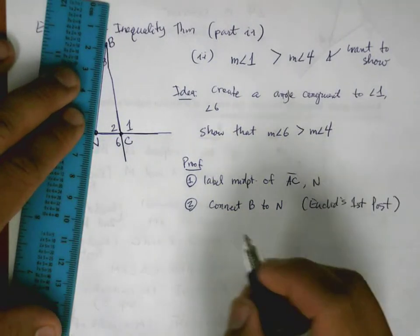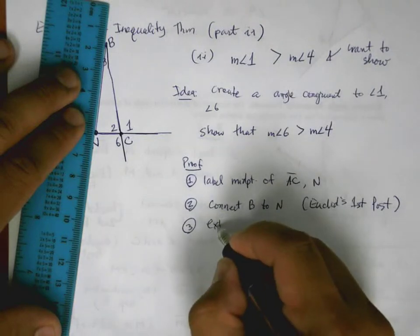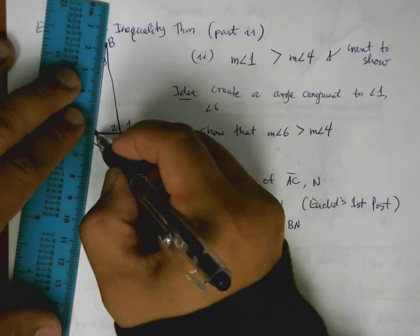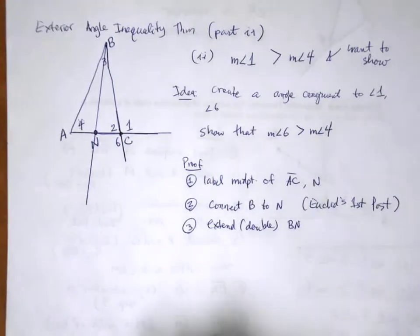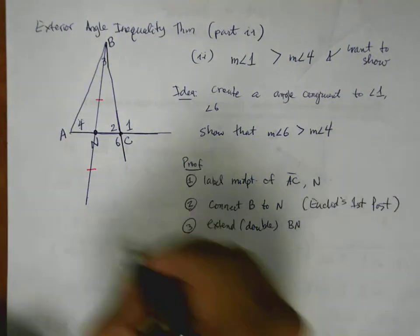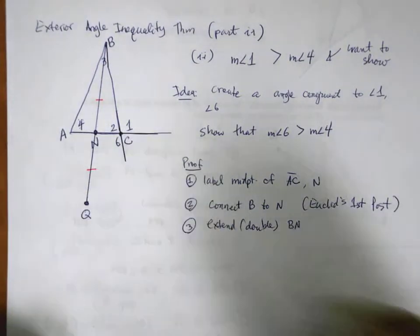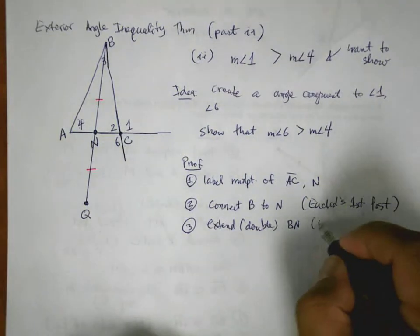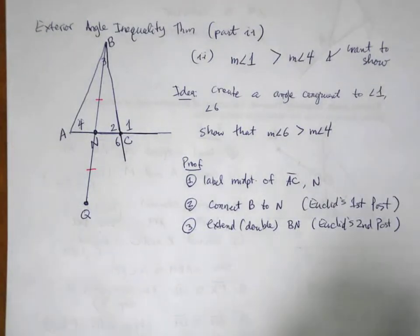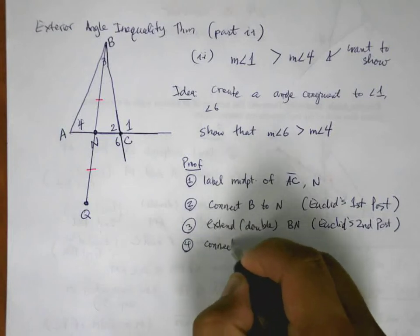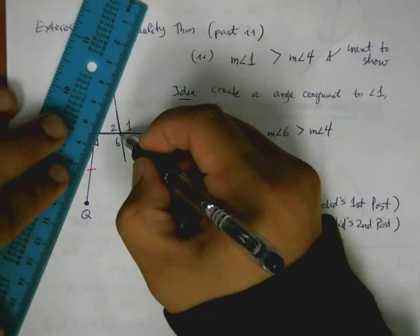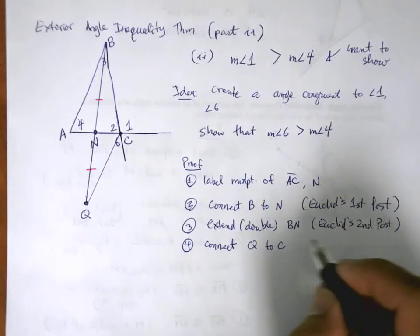Then we're going to do the same thing we did before. Extend double the length of B to N. So take this, extend it so that it's matching to the other one. And we'll call this new point here Q. And again, this is Euclid's second postulate.